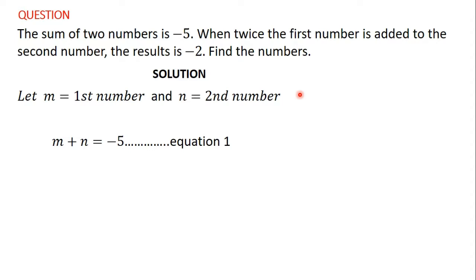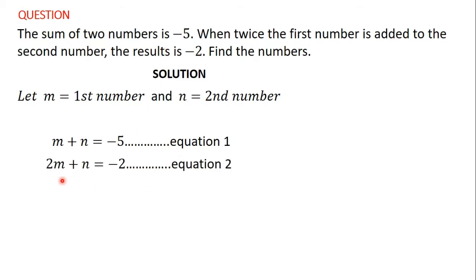Let's move on to the next part. It says that when twice the first number is added to the second number — twice the first number means two times the first number. The first number is m, so two times the first number gives us 2m. So 2m is added to the second number n, meaning we get 2m plus n. The result is negative 2, so 2m plus n is equal to negative 2.